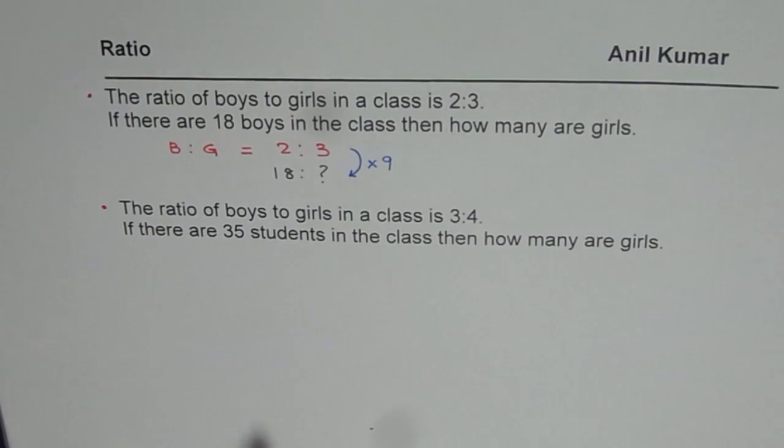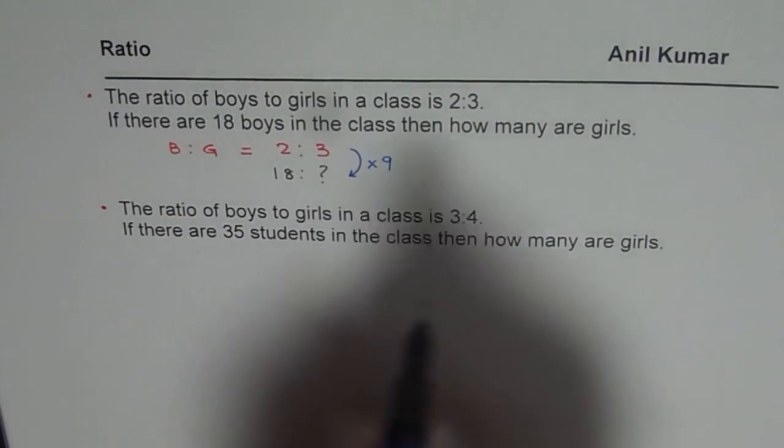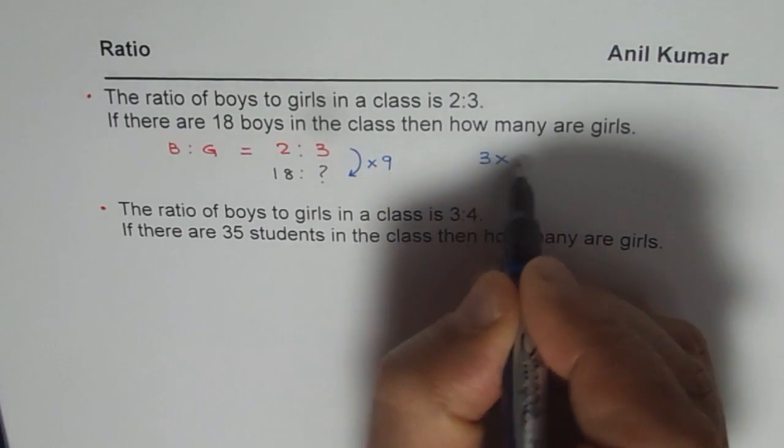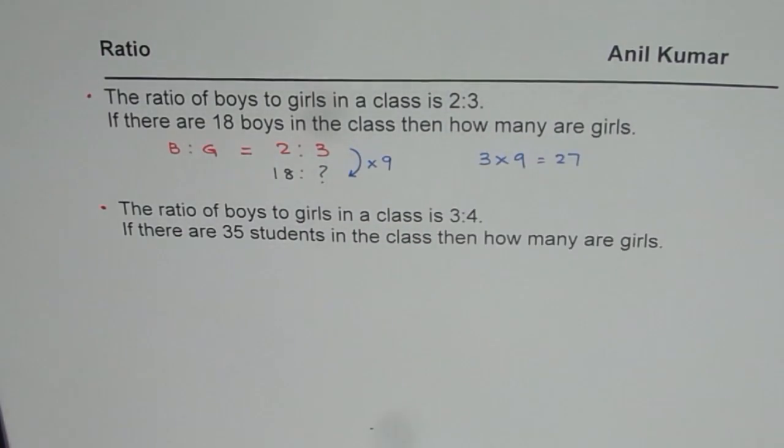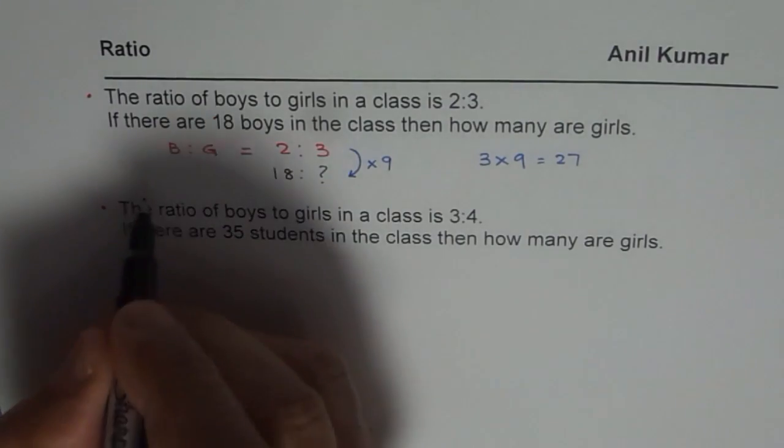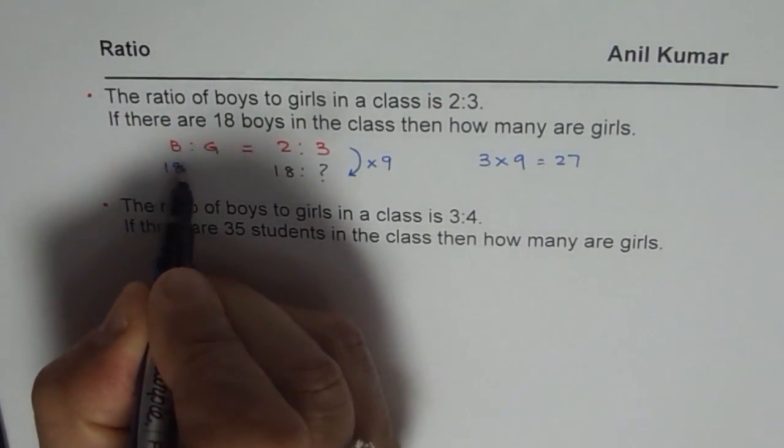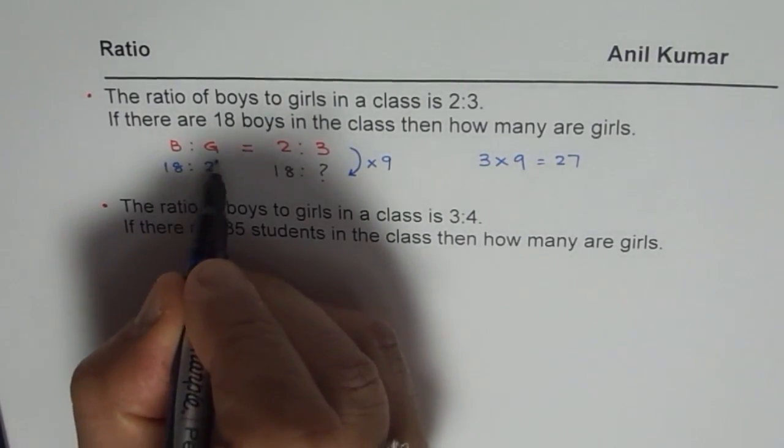So apply the same rule for 3. So 3 times 9 is what? Do 3 times 9 which is 27. So that gives you the answer. Therefore, if the boys are 18 then the number of girls is 27.